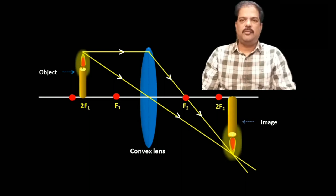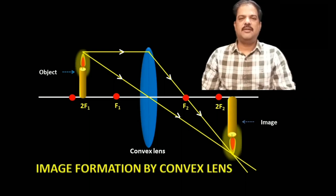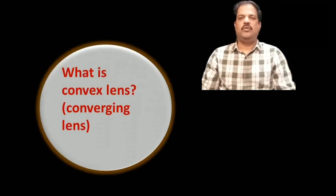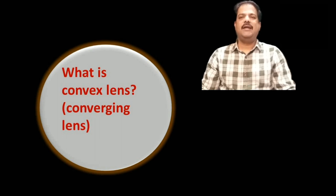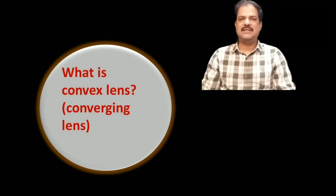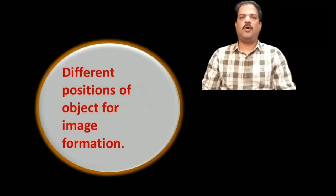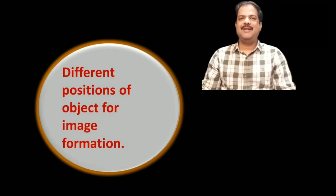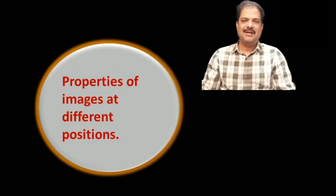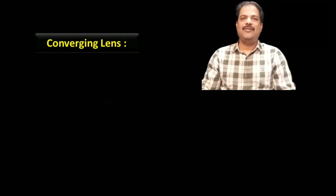Hello friends. Our today's topic is Image Formation by Convex Lens. In this topic, we are going to learn what is a convex lens, why convex lens is known as a converging lens, rules needed for the construction of ray diagram image formed by convex lens, different positions of object for image formation, and properties of images at different positions.